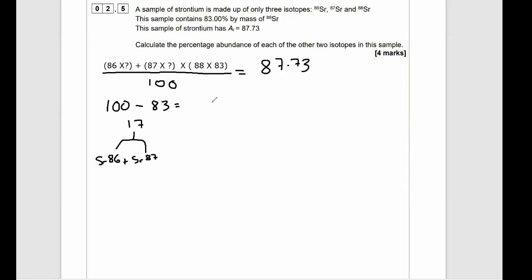So this means that we can write SR86 is going to be equal to 17 minus X, where X is the abundance of strontium 87. So if strontium 87 is X, then SR86 has to be 17 minus X. So, for example, if our X is 3, let's pretend, then our SR86 must be 17 minus 3. We'd know that SR86 was 14.